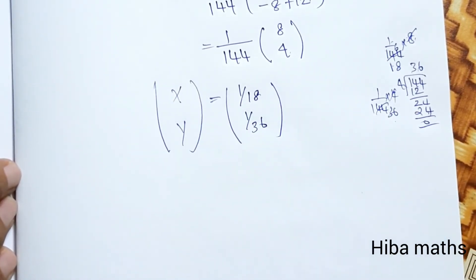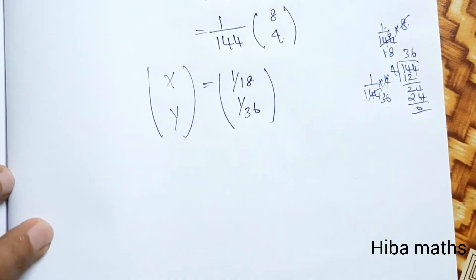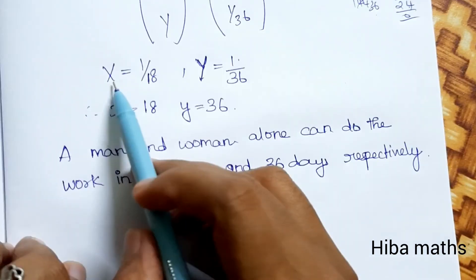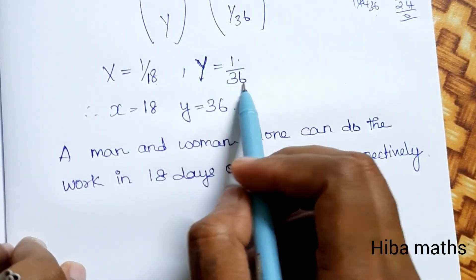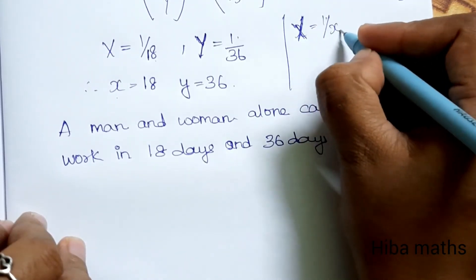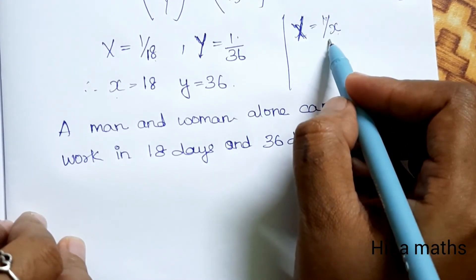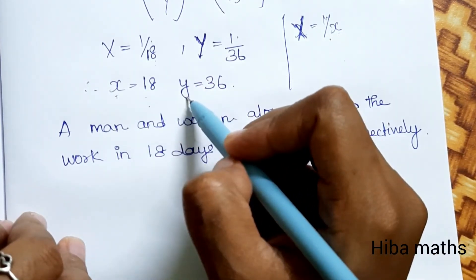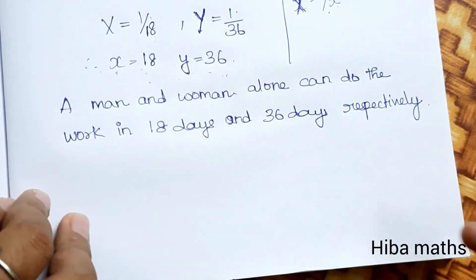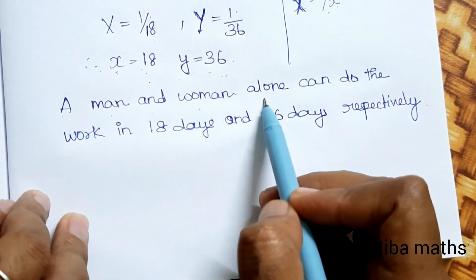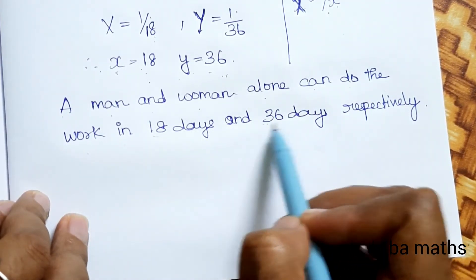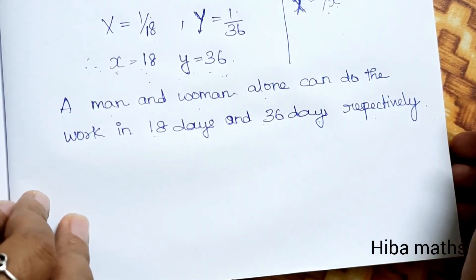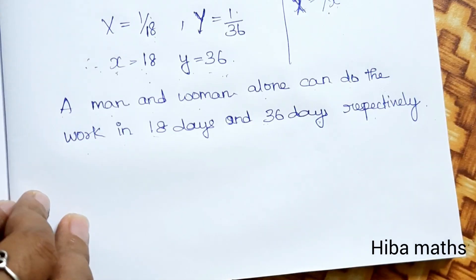Capital X equals 1/18 and capital Y equals 1/36. Since capital X equals 1/x, small x equals 18. Since capital Y equals 1/y, small y equals 36. Therefore, a man and woman alone can do the work in 18 days and 36 days respectively. Thank you so much for watching.